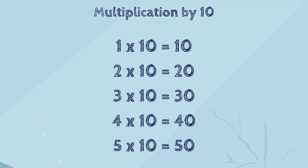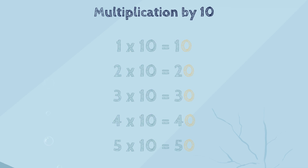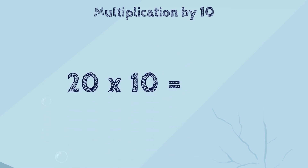Have you noticed something interesting, kids? It looks like you just add a zero to the number that you multiply by ten. Yes, absolutely — you've found the trick! And I can say that it works for any number that you multiply by ten. You just need to add zero to it. So, let's try twenty times ten. What do you think the answer is? Two hundred.